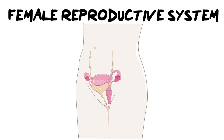Hi everybody and welcome back to Ms. Angler's biology class. I am Ms. Angler. In today's video we are going to be looking at the female reproductive system. I'm going to go through the major structures that you need to be able to identify as well as their functions, and then we'll round this off with some terminology recap.